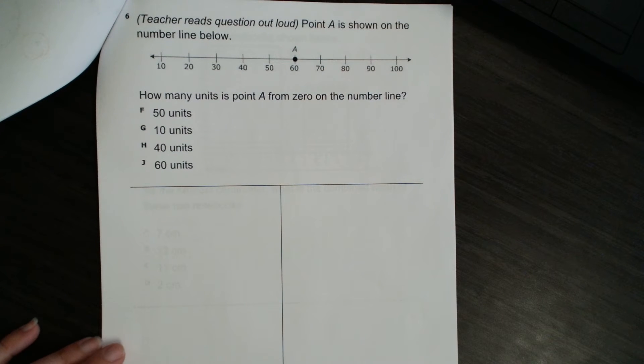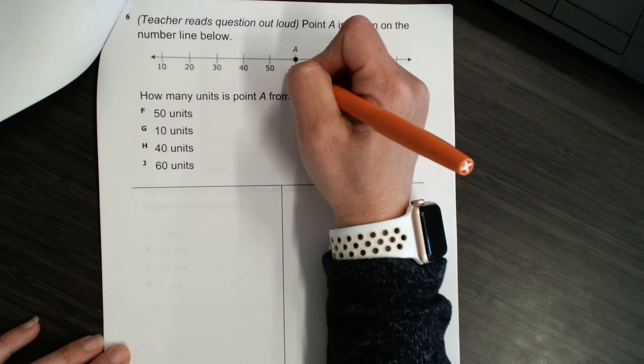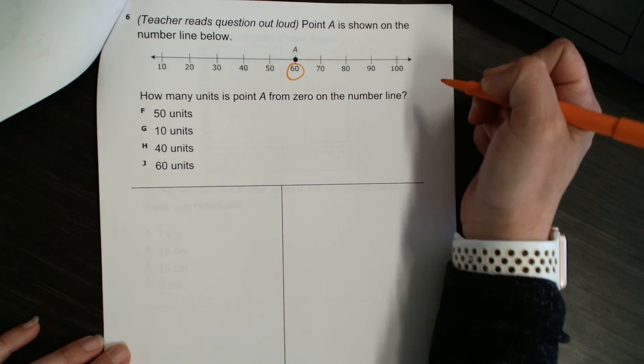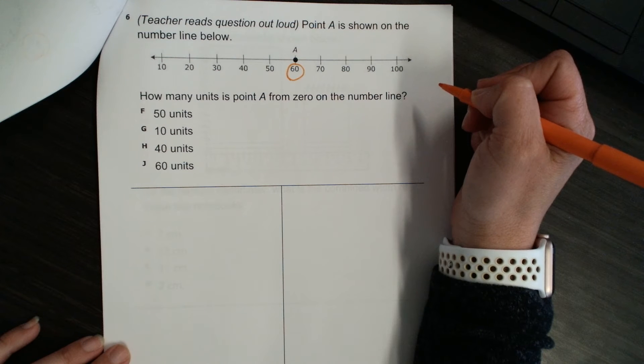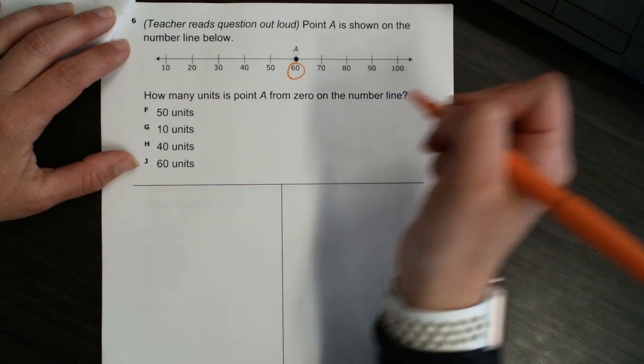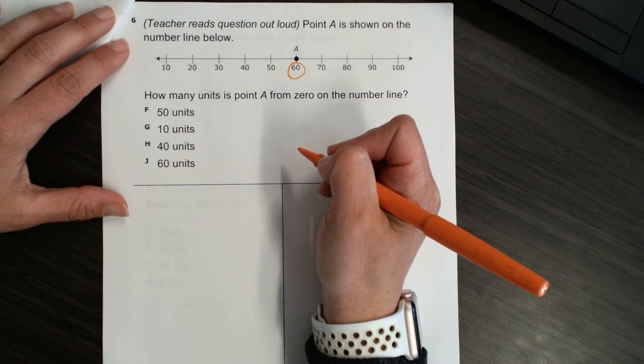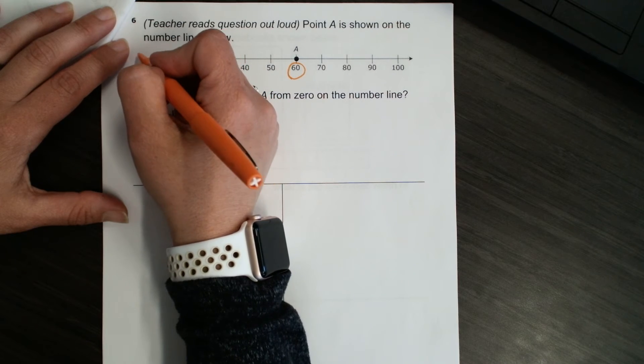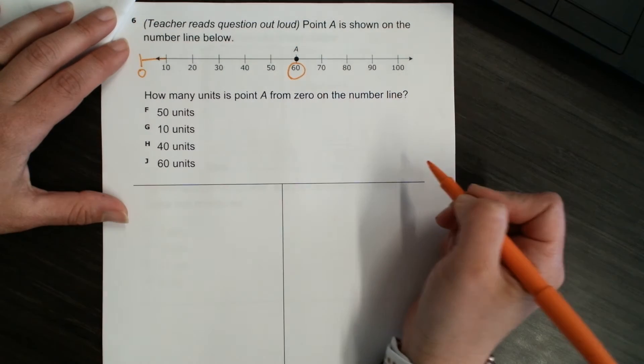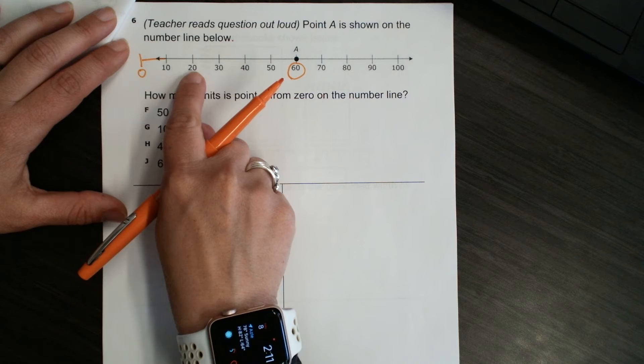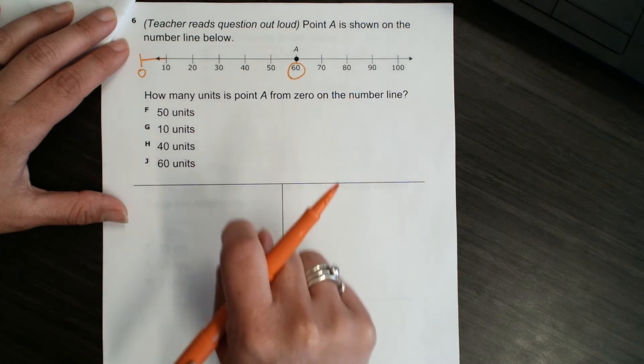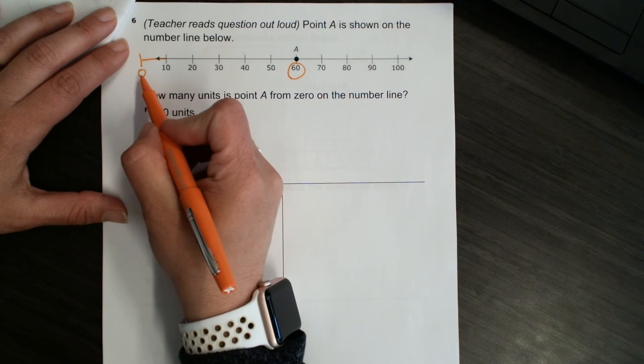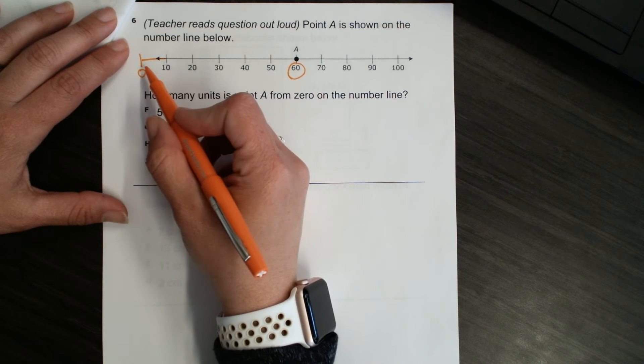Number six. Point A is shown on the number line below. So, A is on 60. How many units is point A from 0 on the number line? So, when I look at my number line, I don't see 0 on this number line. But, I can know that 0 would be about right here. And, I can see we're counting by 10s on this number line. So, if I imagine 0 here and I count by 10,